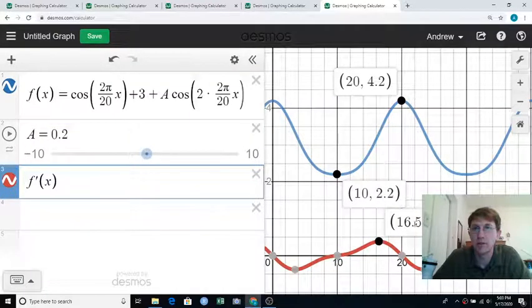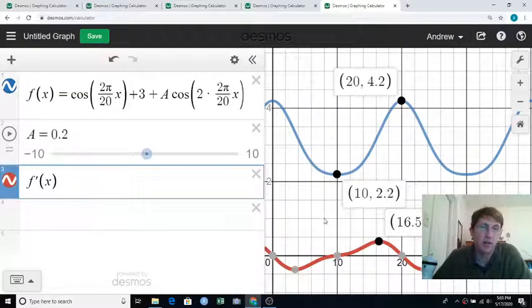Well, no. 16.5 is not halfway between 10 and 20, so it's kind of close to halfway between, but there's no reason inflection points have to be exactly halfway between mins and maxes.